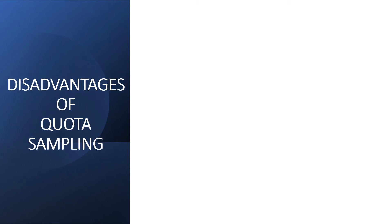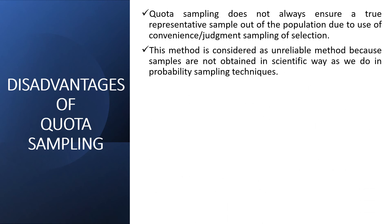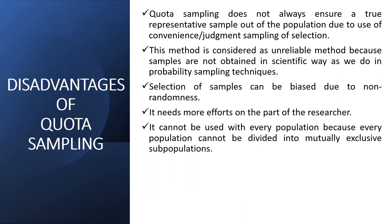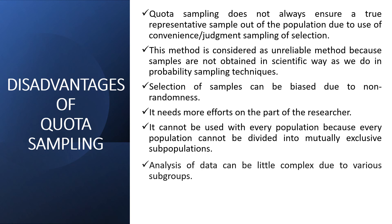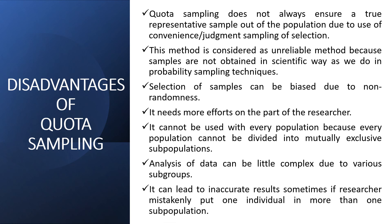It will have disadvantages similar to convenience or judgment sampling due to non-randomness. Quota sampling does not always ensure a true representative sample due to the use of convenience or judgment sampling. It is considered unreliable because samples are not obtained scientifically as in probability sampling. Selection can be biased due to non-randomness. It needs more effort from the researcher. It cannot be used with every population since not every population can be divided into mutually exclusive subpopulations. Data analysis can be complex due to various subgroups, and it can lead to inaccurate results if a researcher mistakenly places one individual into more than one subpopulation.